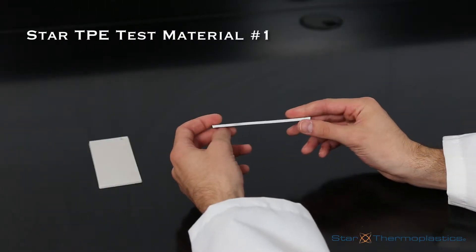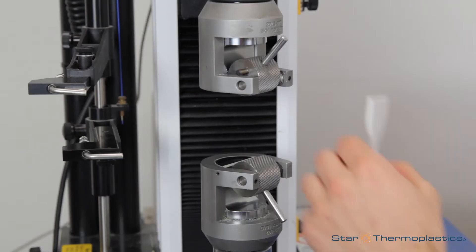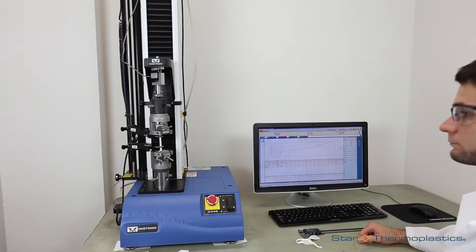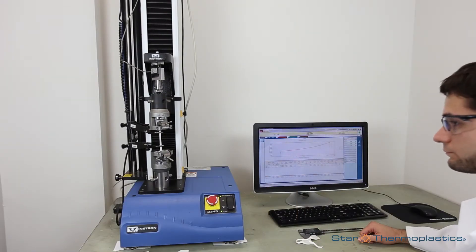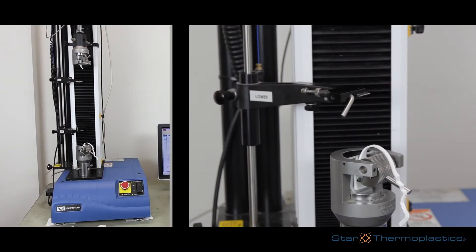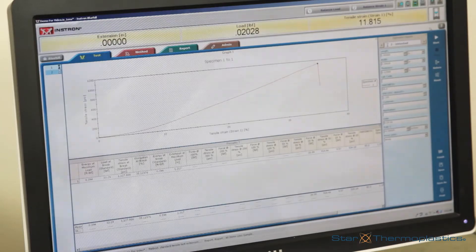The first material we have chosen to test is a Star TPE material with a very high tensile strength, such as what you would see in a strap to secure a bicycle to a car carrier. Wow, that was quite a stretch, and a very high tensile strength result as well.